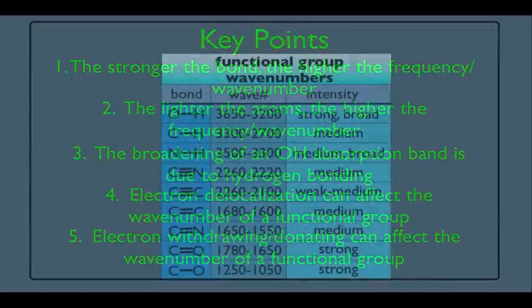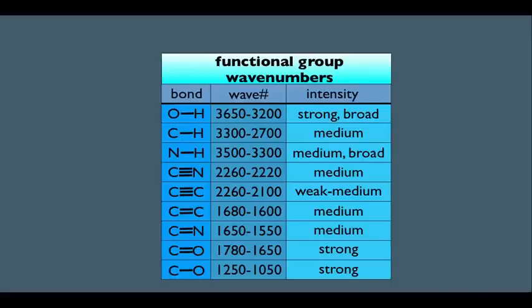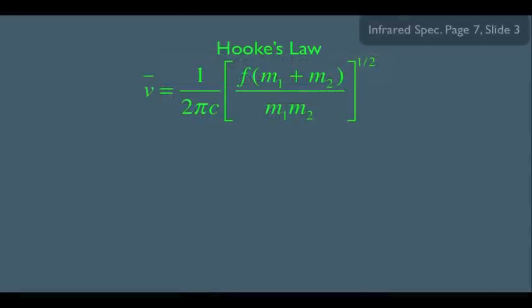Let's go back to our wavenumber chart. All we're doing here is trying to explain why all of these bonds peak roughly at these corresponding wavenumbers. One of the ways we can explain it is using an equation from physics called Hooke's Law, which was related to a spring. It's kind of like how we're conceptualizing bonds in organic chemistry — as springs vibrating, stretching, bending, and wagging. That's why this spring equation is appropriate.